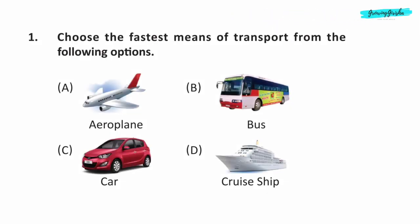Question 1. Choose the fastest means of transport from the following options. Option A — Aeroplane is the fastest means of transport.